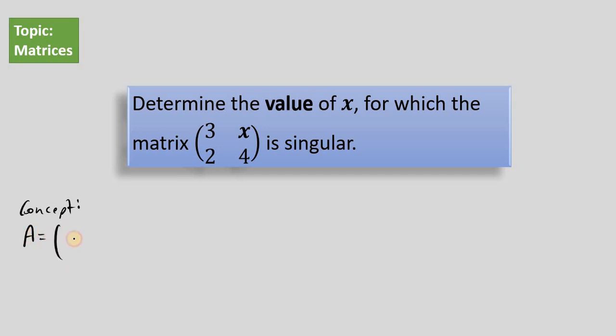Let's look at matrix A with components A, B, C, and D. If we want to find the determinant of matrix A, we'll multiply A by D, which gives us AD, or A times D, minus B times C.